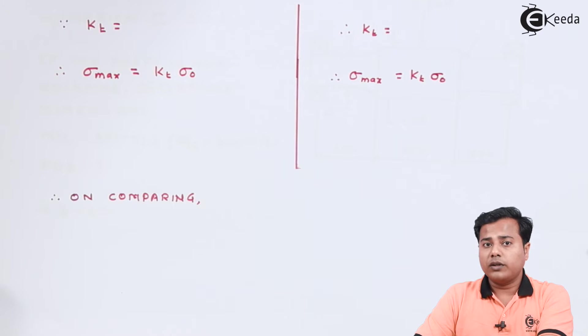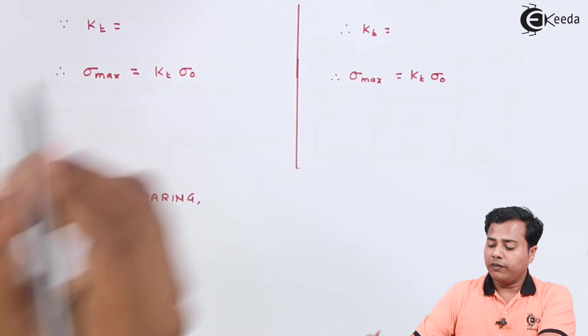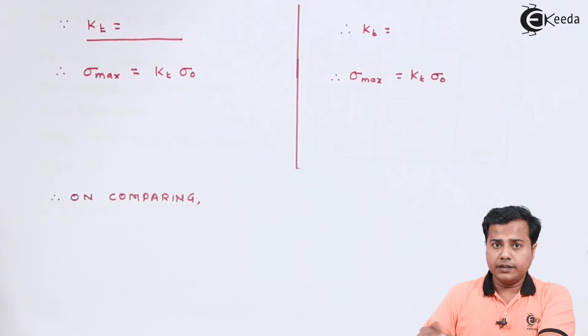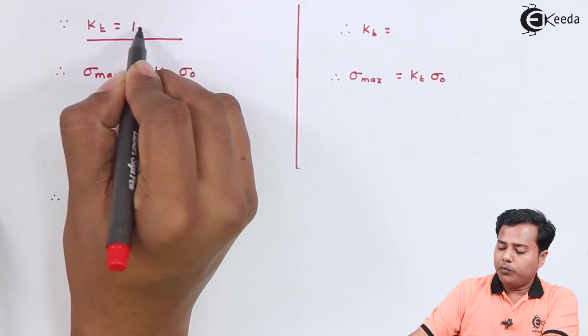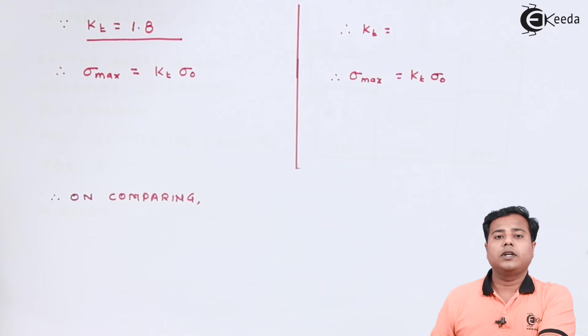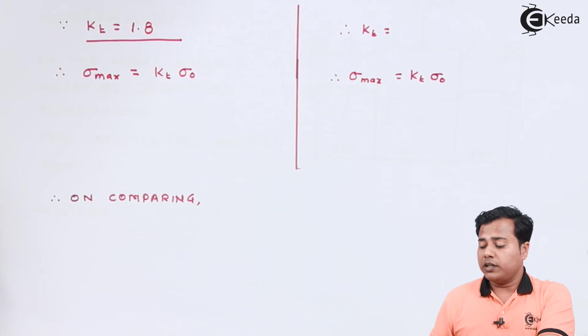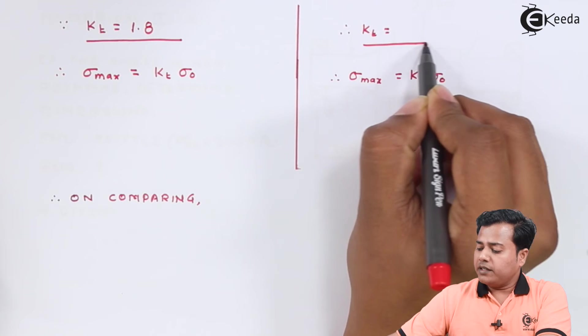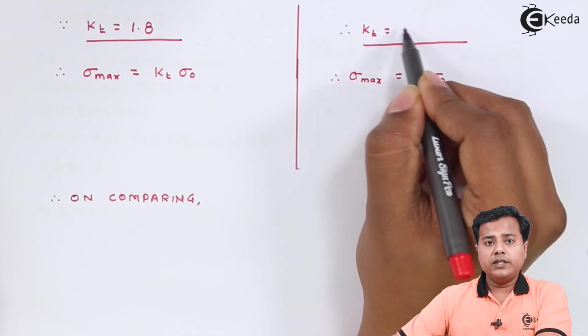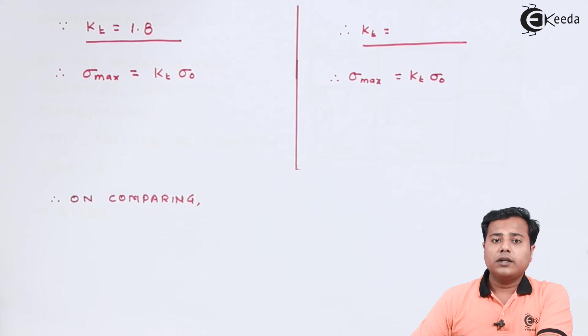Again using similar chart for the plate which we have, r by d ratio, r by w ratio equal to 1.67, we get kt is somewhere around 2.16.